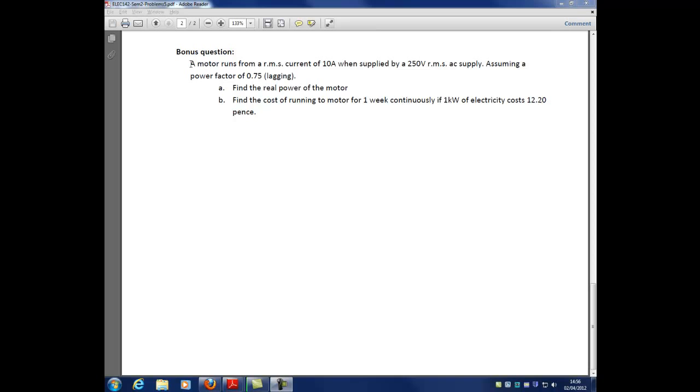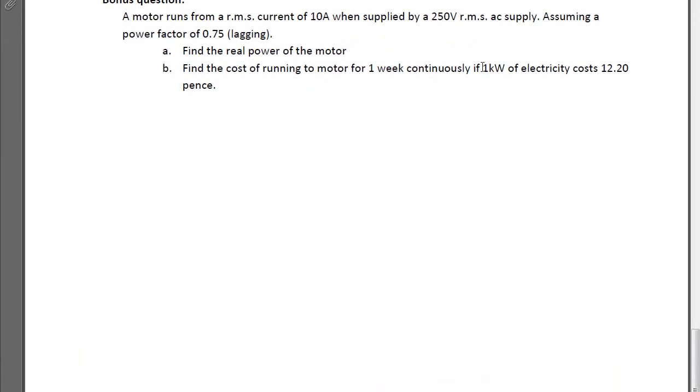You're asked to find the real power of the motor for part A. For part B, find the cost of running the motor for one week continuously. This should say if one kilowatt hour of electricity costs 12.20 pence. I made that correction on Vital. Please make sure you have it, otherwise it doesn't make a lot of sense.